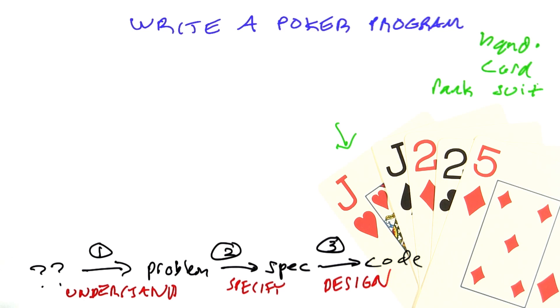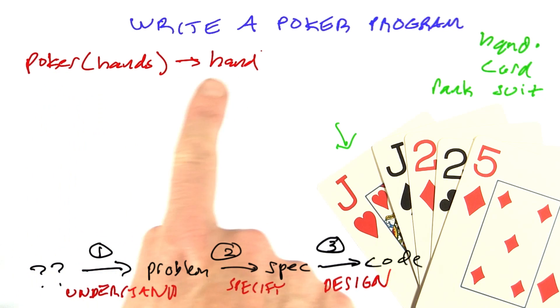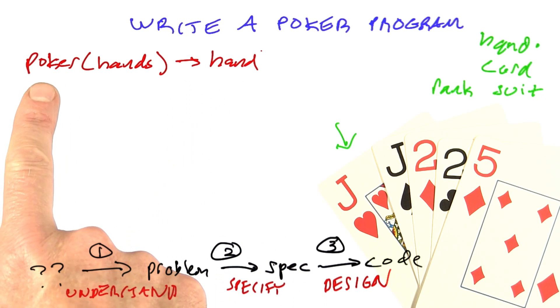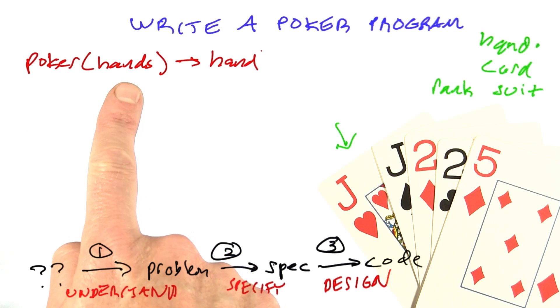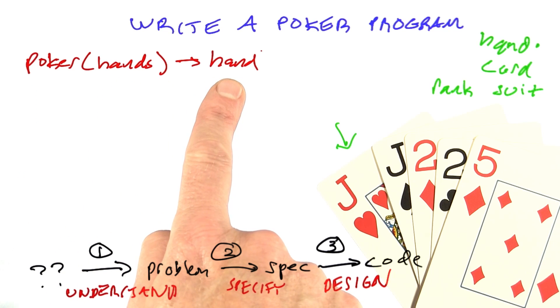the rank is five, and the suit is diamonds. The main program we're trying to specify we'll call poker, and it takes a list of hands as input and returns the best hand.